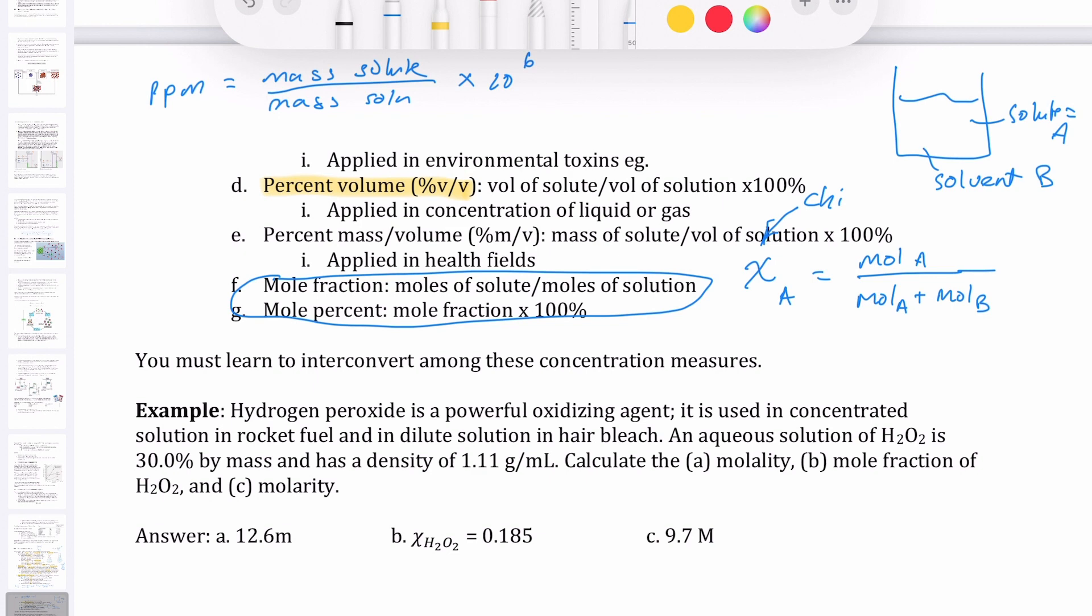So it's really just a ratio of the number of moles of one component over the total. If you want to express this as a percentage, then we just call it mole percent. So when you multiply this by 100%, then it becomes mole percent. But if you don't have the 100%, then it's just called mole fraction, which has that symbol chi.